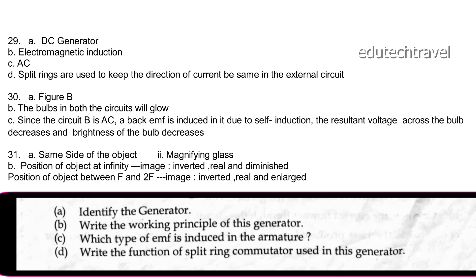What does the negative sign in magnification indicate? A negative sign indicates the image is real and inverted. Magnification is defined as the ratio of the height of the image to the height of the object. The mirror identified here is a concave mirror.